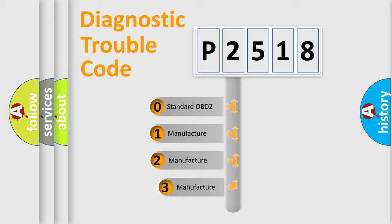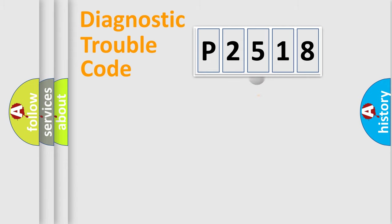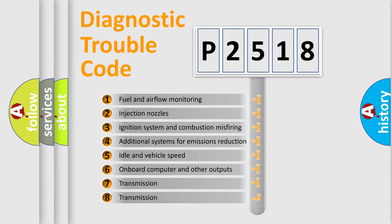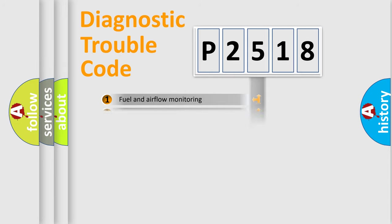If the second character is expressed as zero, it is a standardized error. In the case of numbers 1, 2, 3, it is a manufacturer-specific error. The third character specifies a subset of errors.